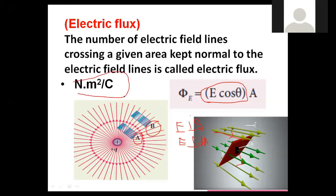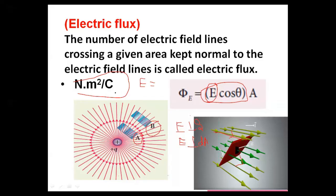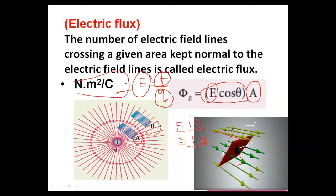The unit of electric flux is Newton meter squared per coulomb. We know that the electric field E is defined as F divided by Q — force per unit charge. The unit of force is Newton, area is meter squared, and charge is coulomb. That is why the unit of electric flux is Newton meter squared per coulomb.